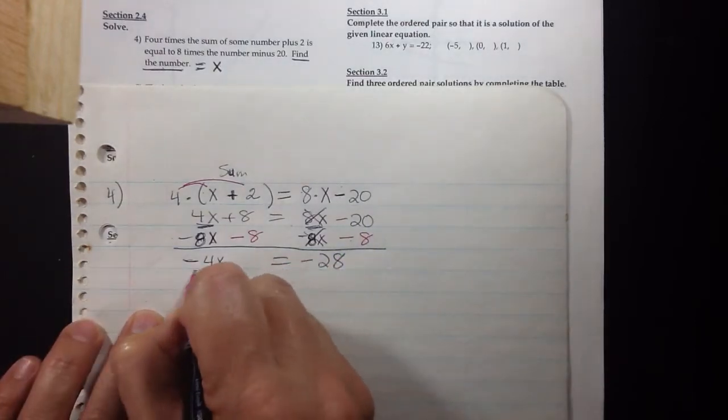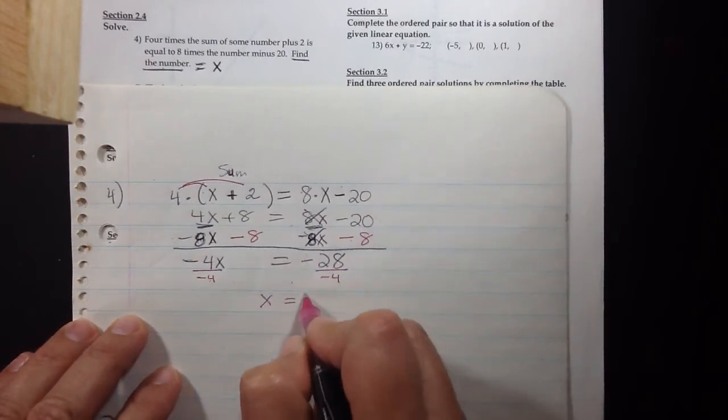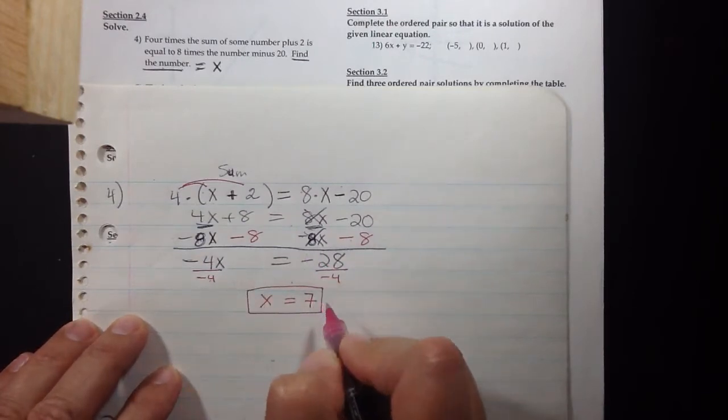And now we just divide by negative four, and two negatives divide positive. Positive seven is the answer.